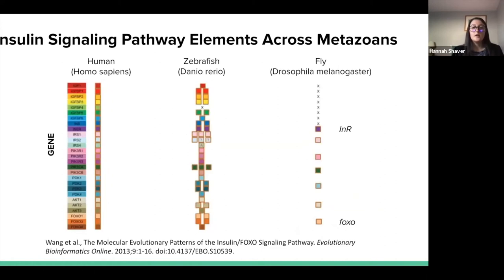This figure depicts the conservation of the insulin pathway across metazoans, where each gene is a different color and boxes below the classification represent which genes are present in that species. Almost all genes are conserved from humans to zebrafish, and a good proportion are also conserved to flies. We're specifically looking at INR shown in purple and the FOXO gene in orange.